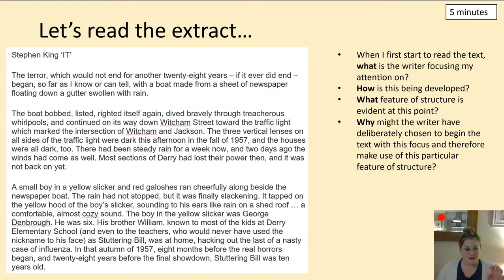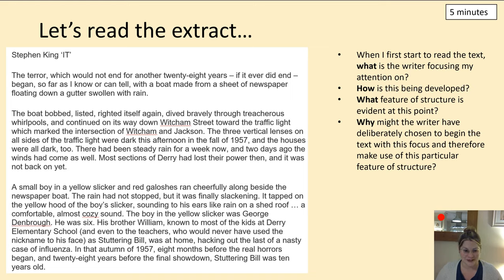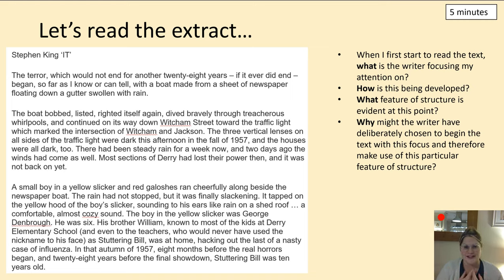Lots of juxtaposition here. 'A small boy in a yellow slicker and red galoshes ran cheerfully along beside the newspaper boat. A comfortable, almost cosy sound. The boy in the yellow slicker was George Denbrough. He was six. His brother William, known as Stuttering Bill, was at home hacking out the last of a nasty case of influenza. In the autumn of 1957, eight months before the real horrors began and 28 years before the final showdown, Stuttering Bill was 10 years old.' We've got reference to horrible things — is the flu the terrible thing? Then it's revealed it's eight months before the real horrors began. It's building up, leaving things very ambiguous, with a lot of detail for no apparent reason. It seems like mundane details, but that adds to the unsettling atmosphere.